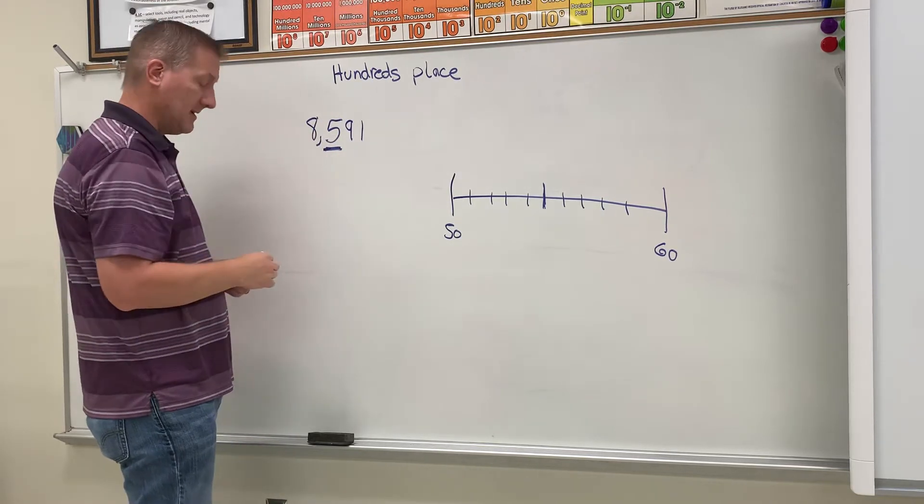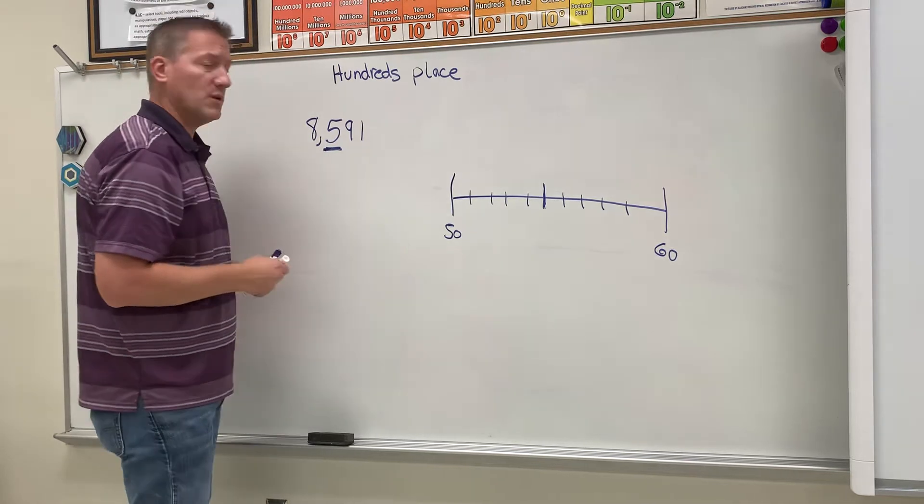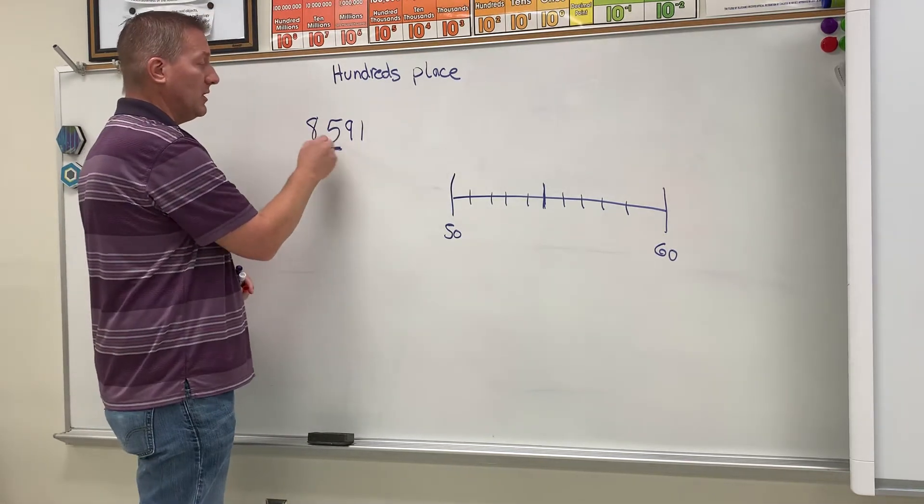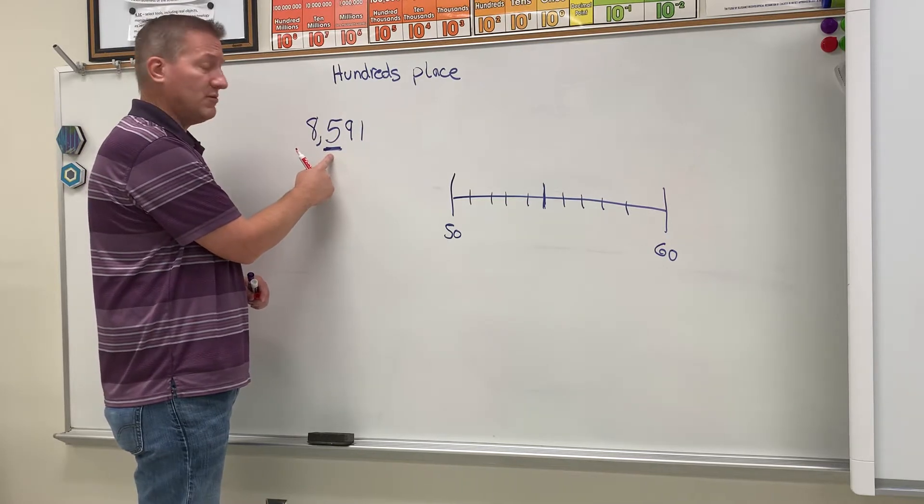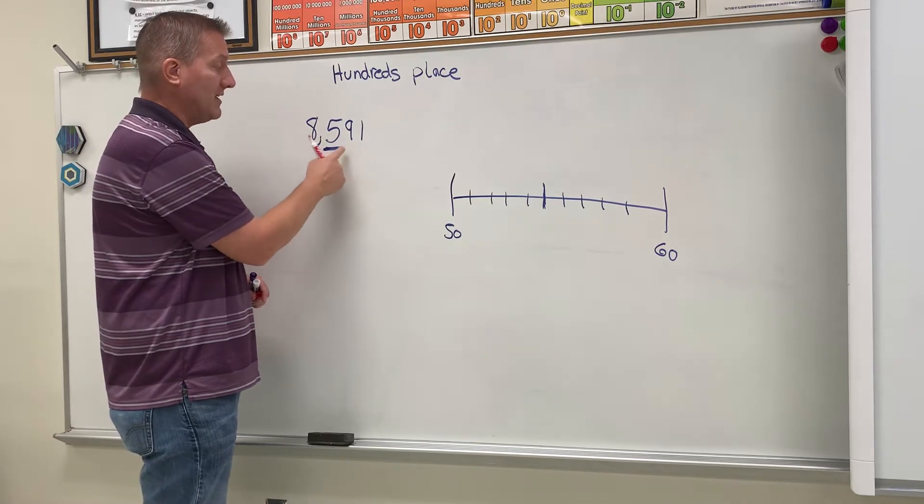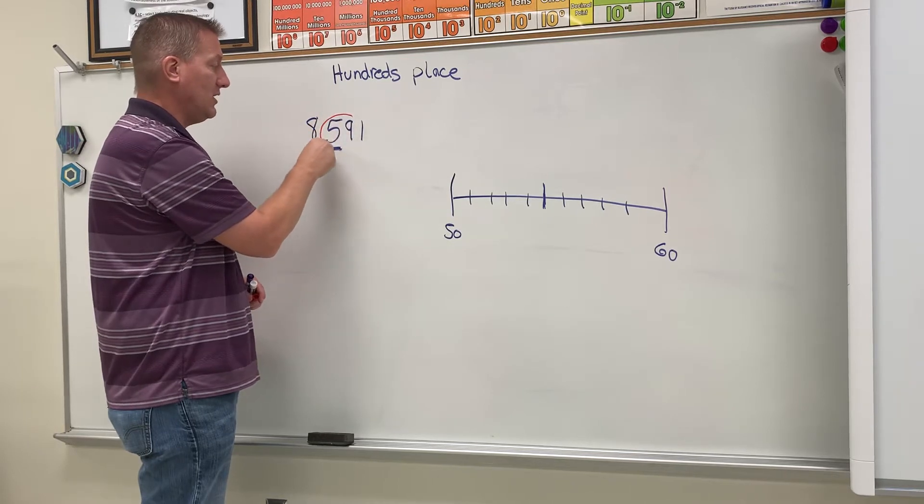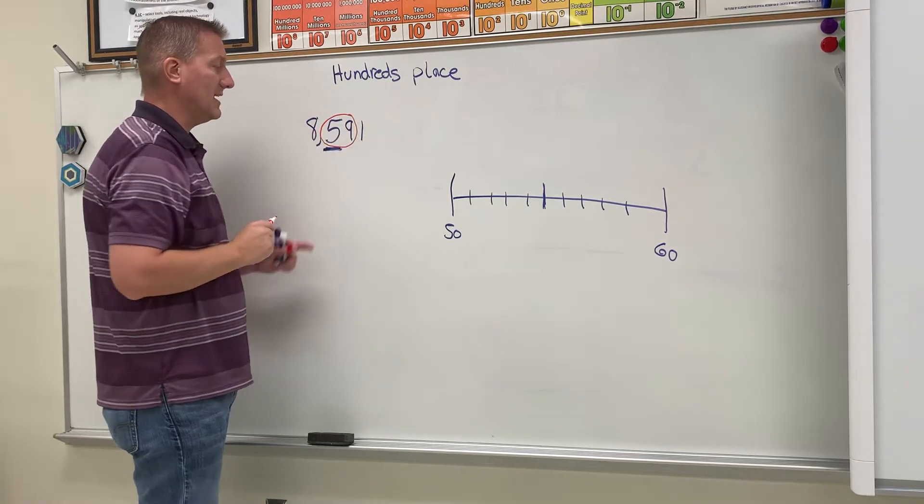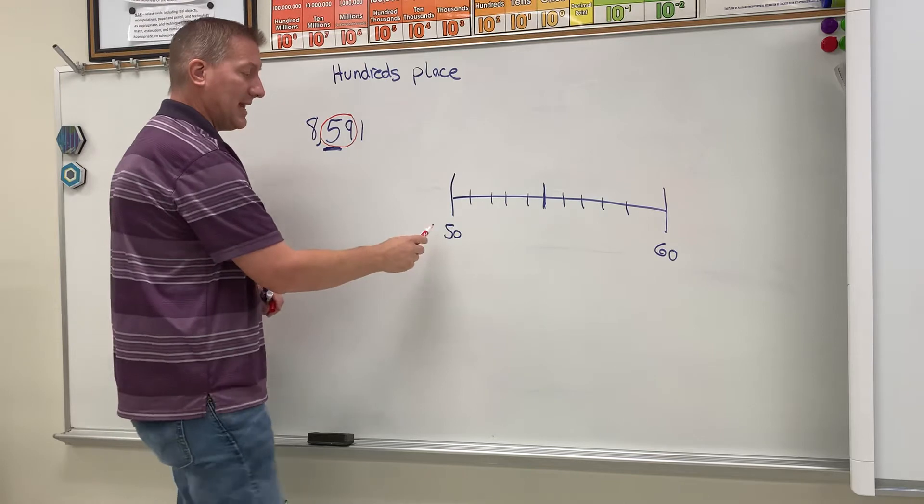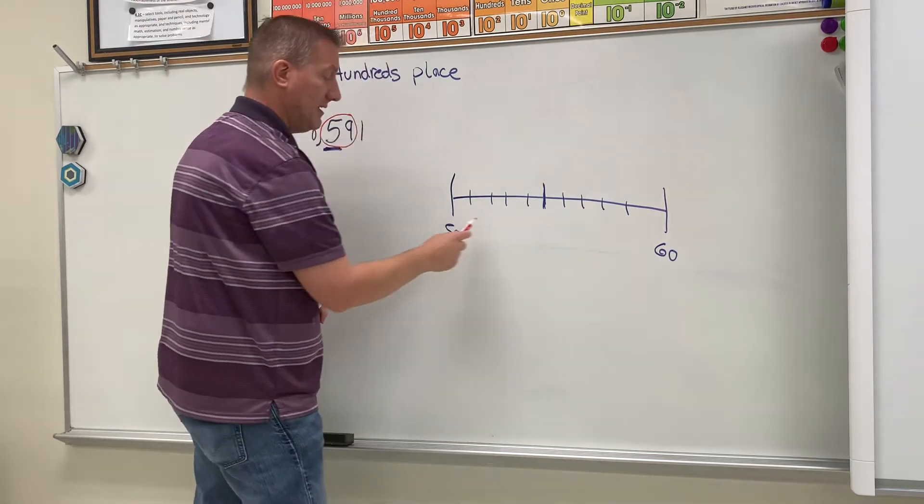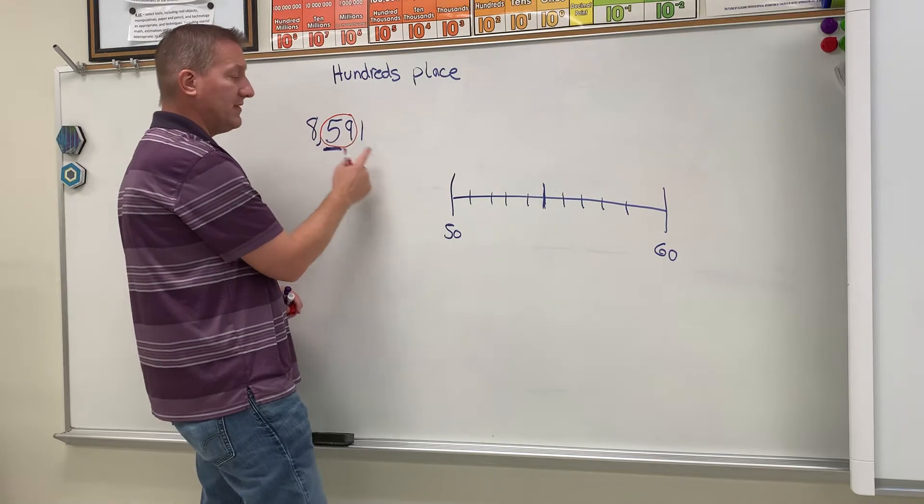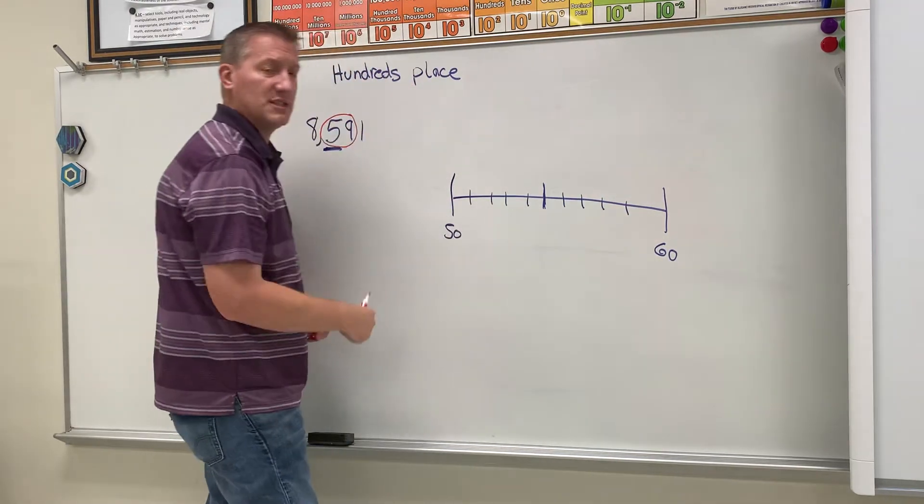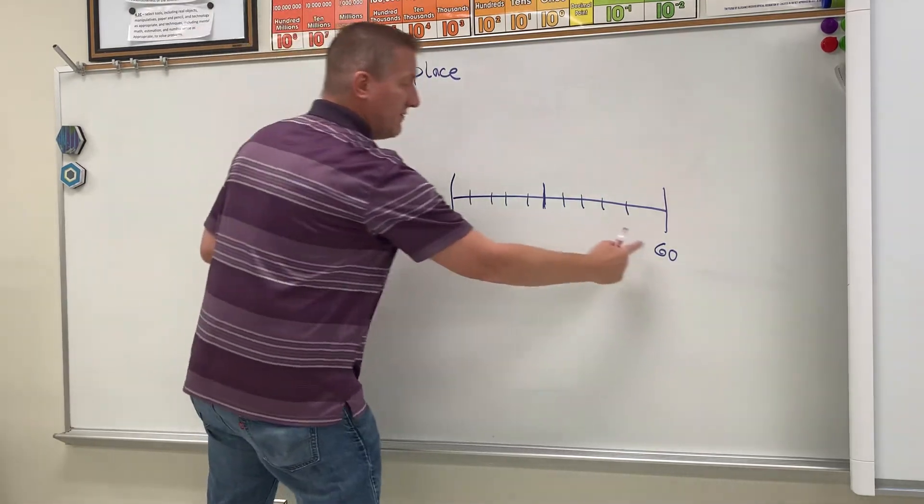So this is what you would do: you would look at the number, the place value you're rounding to, and then the number to the right, and you would circle both those. Then you would take that over on a number line, and you would make it from 50 to 60 because 59 is in between 50 and 60.